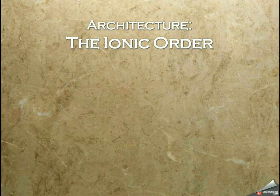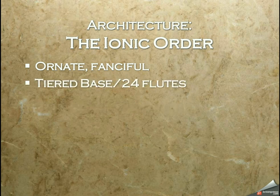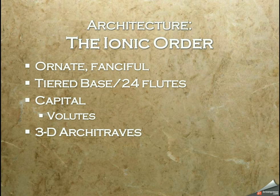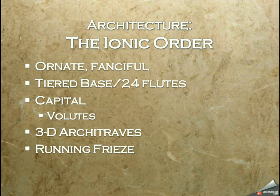We'll move from the Doric order to the Ionic order. These are fancier — more ornate and fanciful. There's a tiered base with 24 flutes, the capital is composed of the volutes, 3D architraves, and a running frieze with all kinds of carved detail. As you look at these in the textbook, you'll notice the difference between the Doric and the Ionic order.